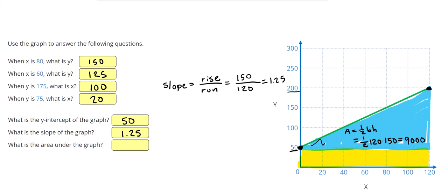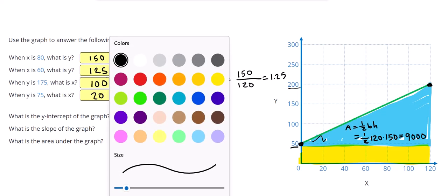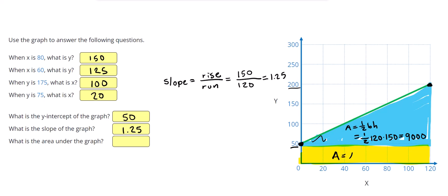Then for the rectangle itself, the area of a rectangle is just length times width. The length is 120, just like the base of the triangle, but now the width, or the height, is just 50, and that gives us 6,000.